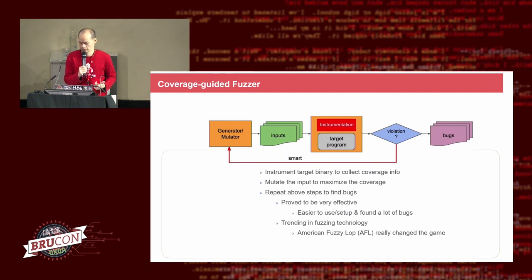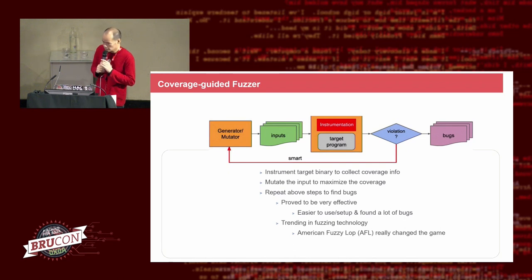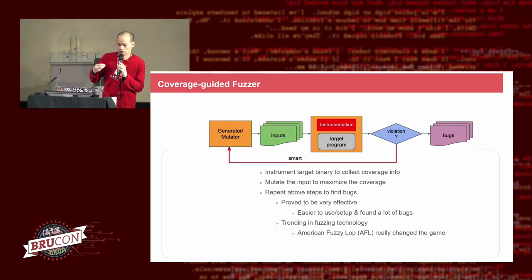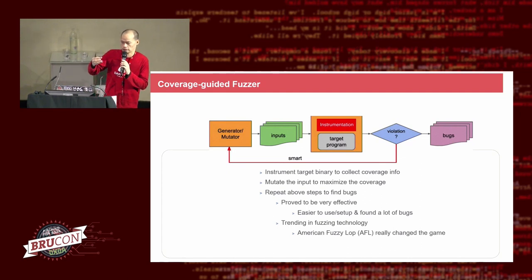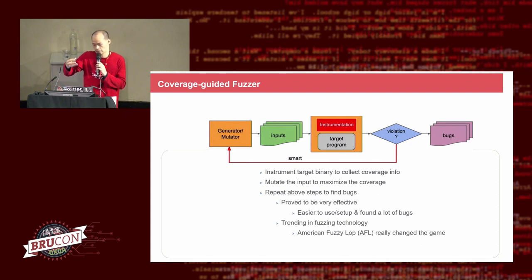Coverage-guided fuzzing has proved to be very effective and has found a lot of bugs in the last few years. It's easier to use, easier to set up, and really finds a lot of bugs. One example is American Fuzzy Lop, or AFL. The idea is that AFL relies mostly on programs with source code. To find bugs in a program, you need the source code first, then AFL uses its own compiler to automatically introduce instrumentation. At the output, you have an already-instrumented binary.